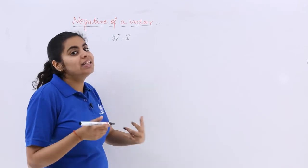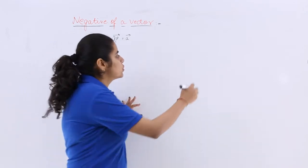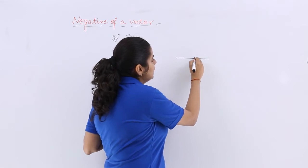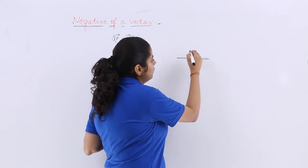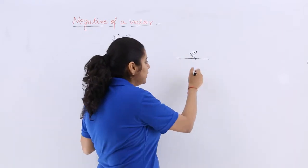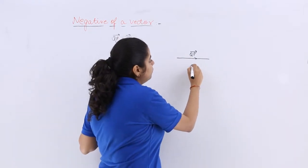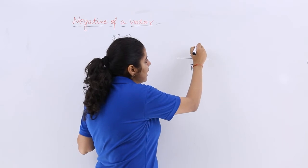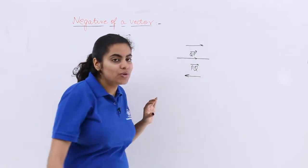So if I draw a vector and I say that this particular vector is QP vector, then what is the negative of this vector? Negative of this vector is nothing but your PQ vector, because if its direction is like this, this will have the direction opposite.